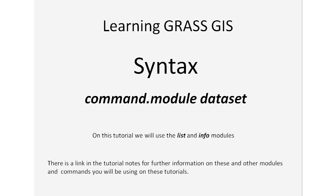We're also going to work on the syntax. For this tutorial we're going to use the command dot plus the module and the dataset or file that we want acted upon. We're going to be using the list and info modules, which are pretty much self-explanatory. List will show particular information about our dataset or file, and info will give us additional information not readily visible from that same dataset or file. There will be a link in the tutorial notes for you to get more information on these and other commands.